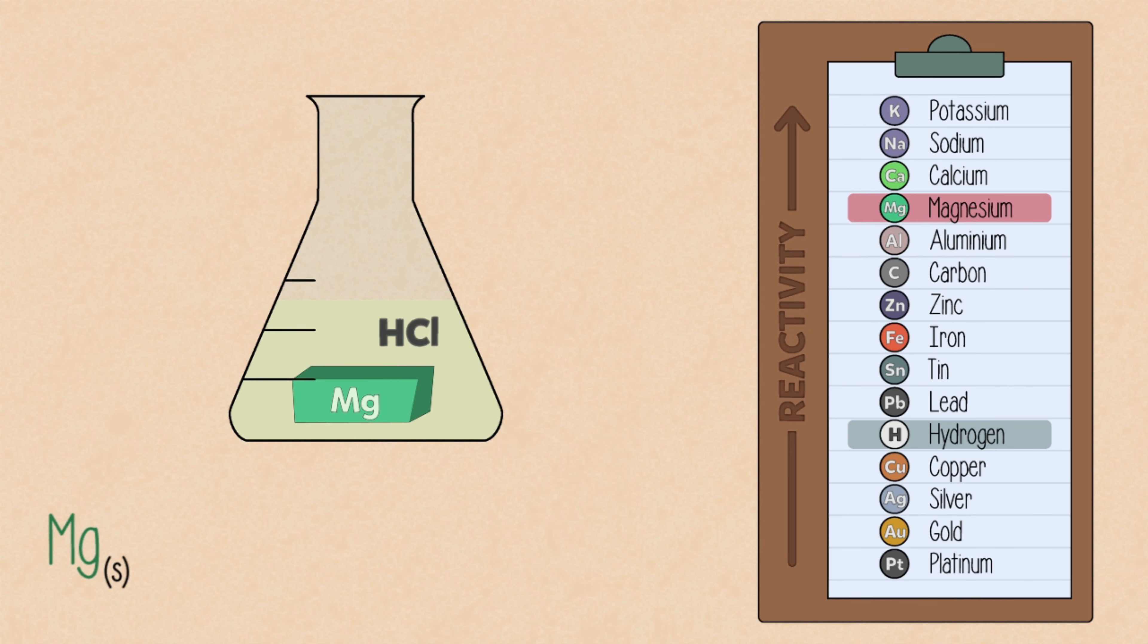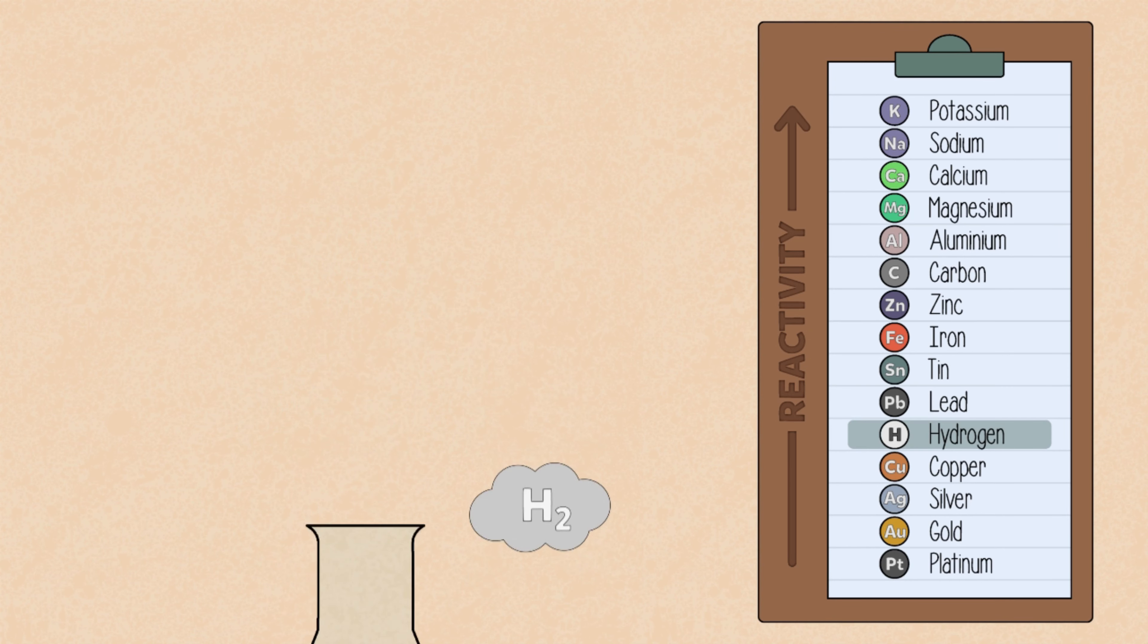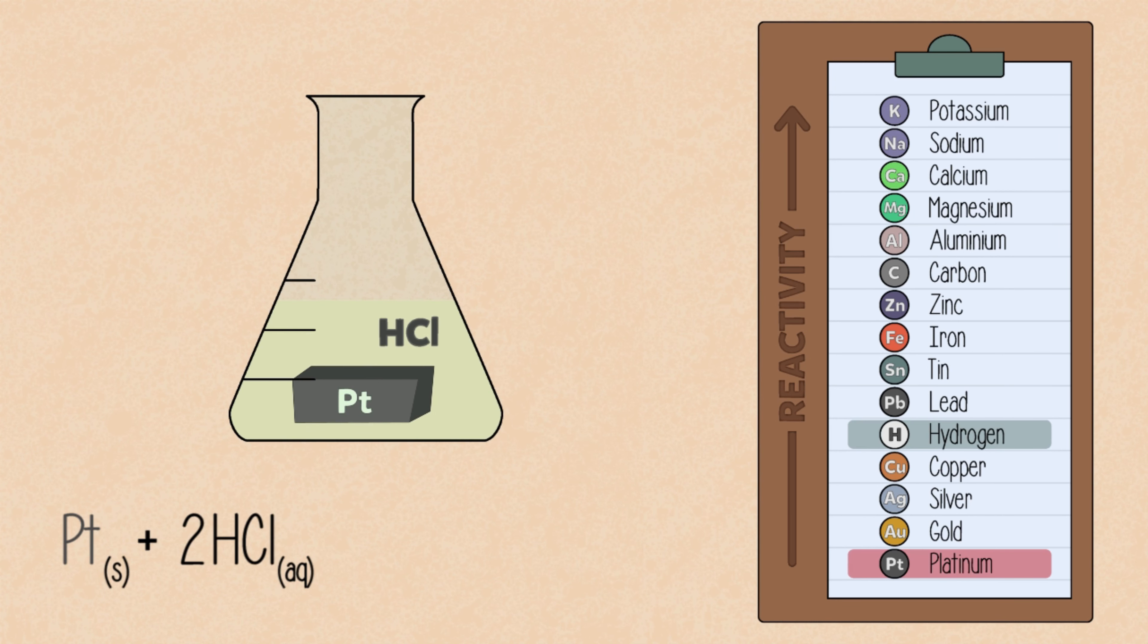Magnesium metal will dissolve in hydrochloric acid, releasing hydrogen gas and forming aqueous magnesium chloride. Since platinum is lower than hydrogen on the series, it will be unreactive in hydrochloric acid.